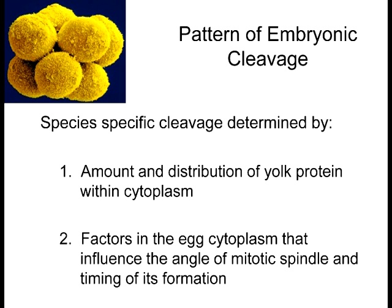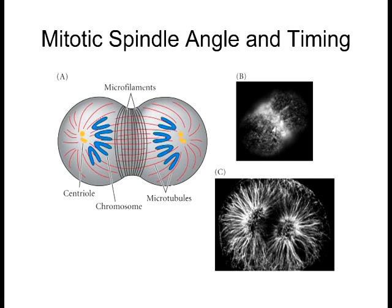The other factor affecting cleavage pattern is the timing and angle of the mitotic spindle, which in many cases is predetermined by cytoplasmic components placed before fertilization even began. Where the mitotic spindle starts forming is influenced by where the nucleus is found. In Xenopus, the nucleus migrates up toward the animal pole rather than sitting in the vegetal pole, and that influences the first mitotic stages and therefore cleavage stages.